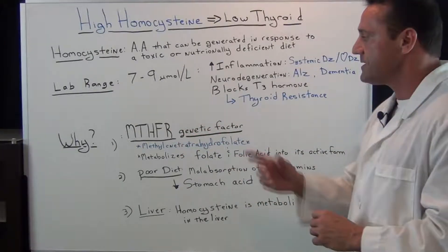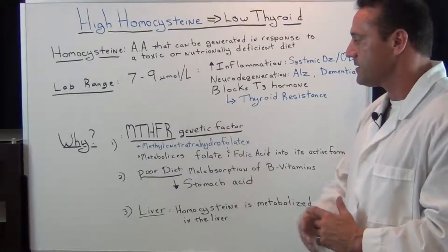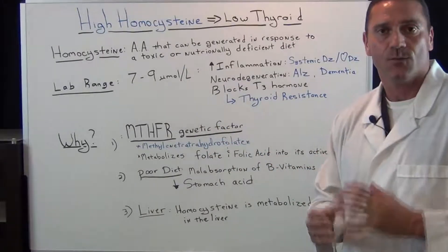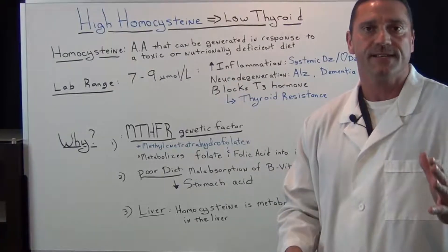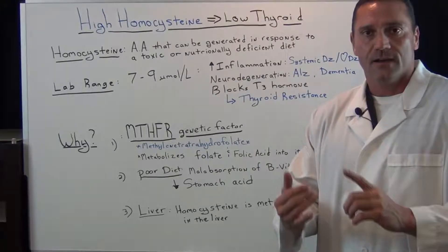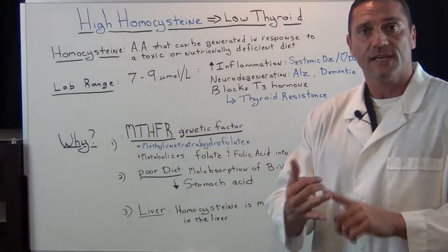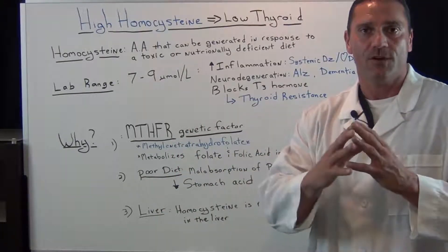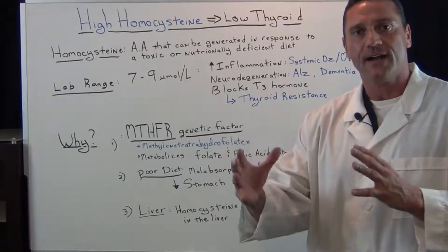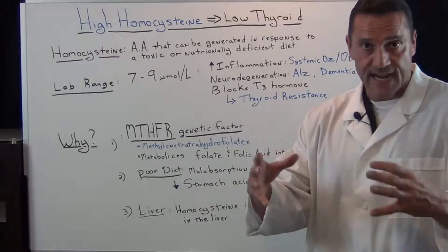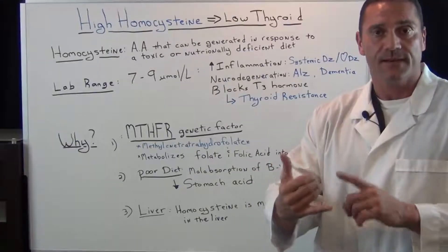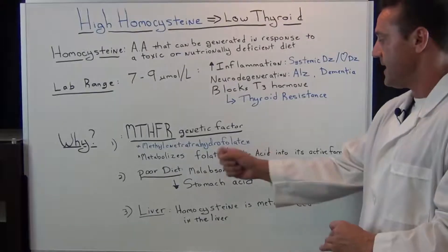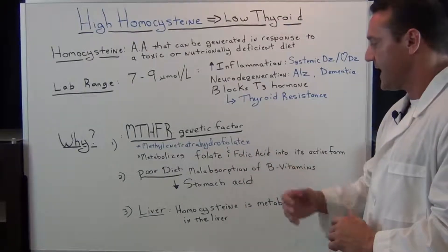What is MTHFR? This is methylenetetrahydrofolate reductase. What this basically does is it breaks down B9, folate, and folic acid into its active form. When you break down your B vitamins into their active forms, they can be utilized — whether it be B9 or B12. So it metabolizes folate and folic acid, and we need B vitamins for the function of the nervous system.